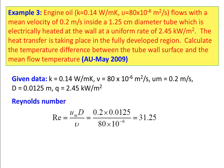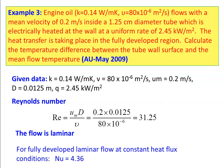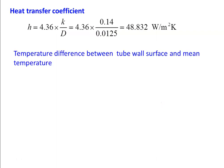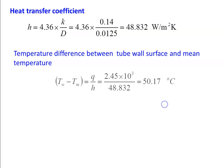Reynolds number = U·D/ν = 0.2 × 0.0125 / (18 × 10⁻⁶) = 31.25 — laminar flow. For fully developed laminar flow at constant heat flux, Nusselt number = 4.36 (from HMT data book). Heat transfer coefficient H = 4.36 × k/D = 4.36 × 0.14 / 0.0125 = 48.832 W/m²·K. Temperature difference Tw − Tm = q/H = 2450 / 48.832 = 50.17°C.